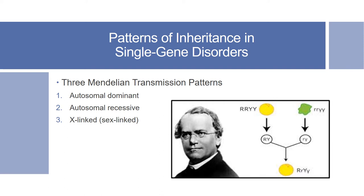There are three Mendelian patterns of inheritance: autosomal dominant, autosomal recessive, and X-linked, or sex-linked, because the X chromosome is a sex chromosome. There's also a reference image of Gregor Mendel and his pea inheritance experiment, which depicted dominance of round smooth peas versus wrinkled peas.